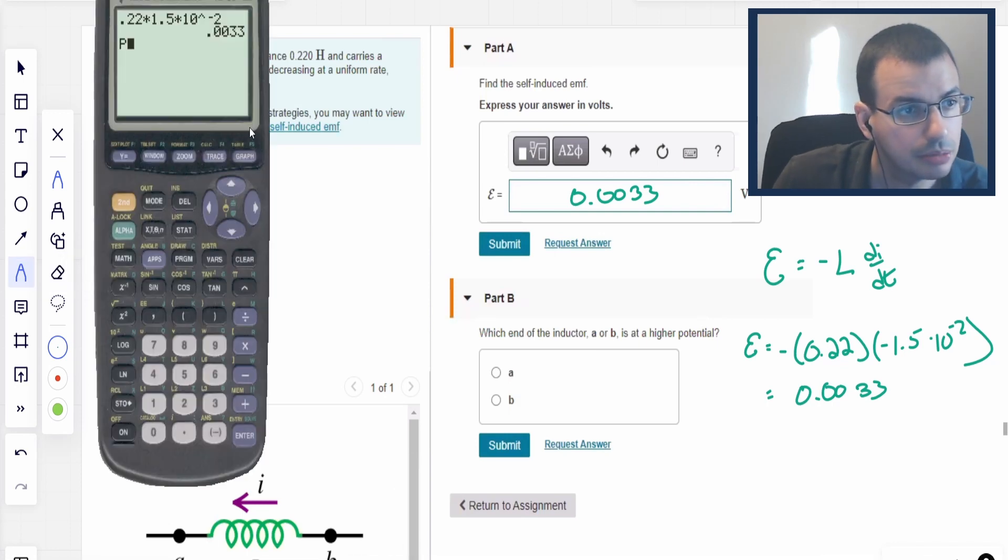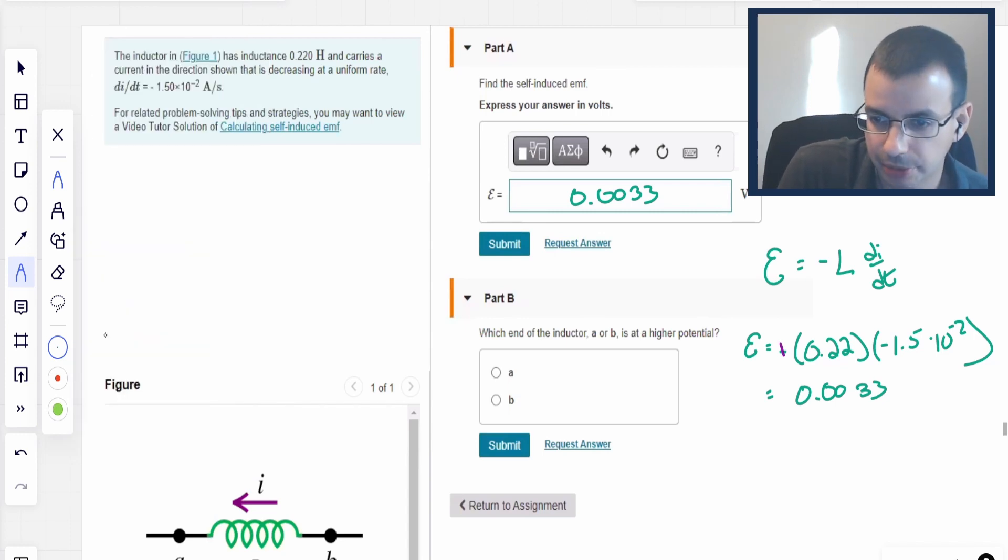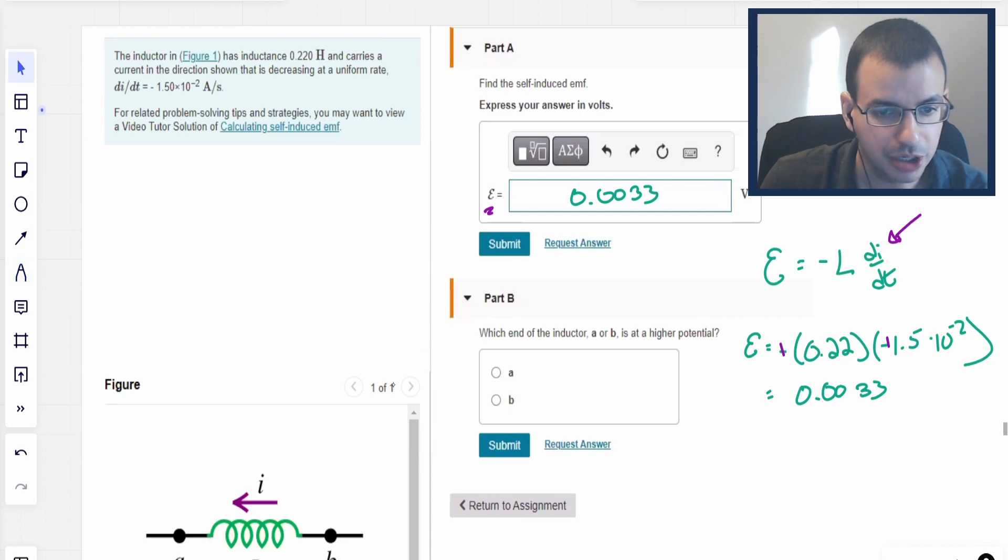One key point here that I kind of glossed over is we had double negatives. Double negatives cancel, two negatives become a positive, and so it is positive emf. What that means is that it is in the same direction with respect to the current I. So when we come down here to this question,